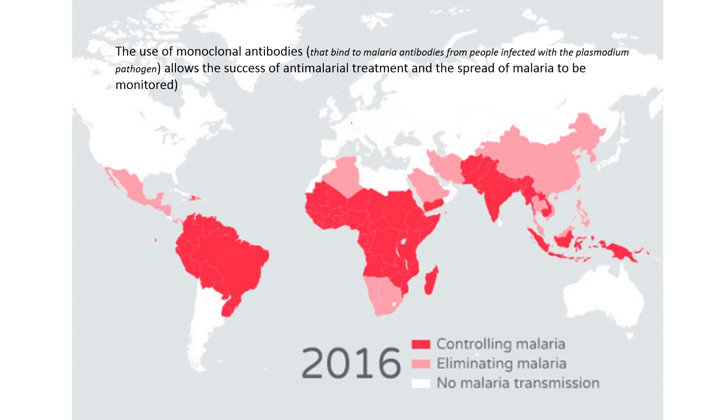We can also monitor the spread of malaria, and that's how scientists are able to produce maps like the one you see now. We can see countries that haven't got malaria at all, countries where malaria is in a decrease, the pale pink ones, and then countries where malaria is a problem and attempts are ongoing to try and reduce the malaria pathogen and rate of transmission.